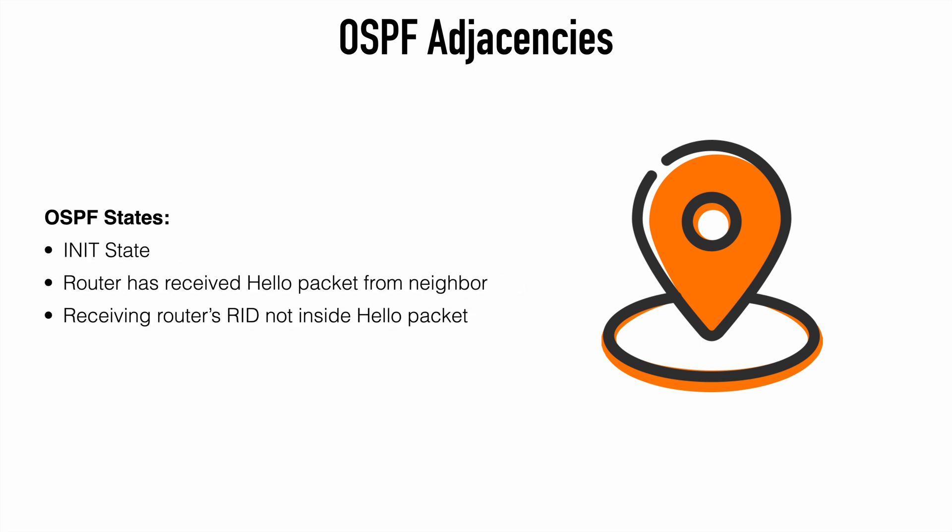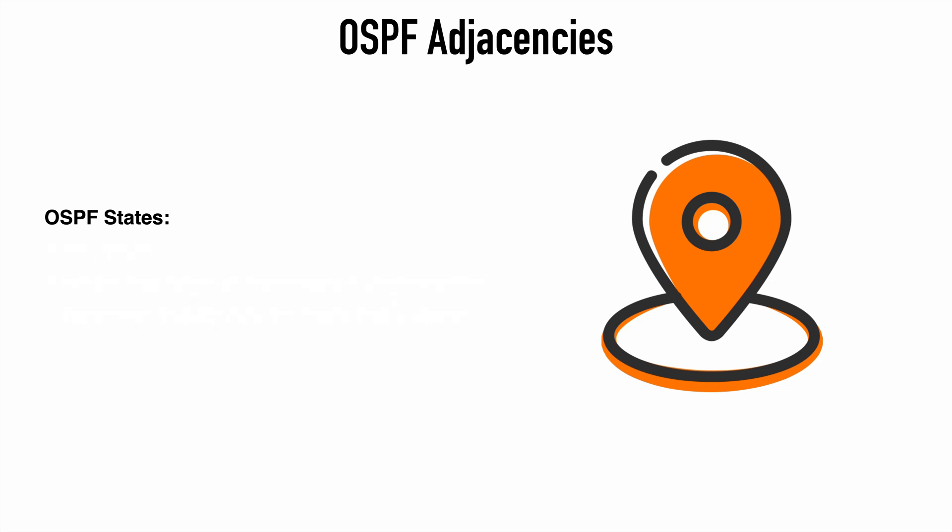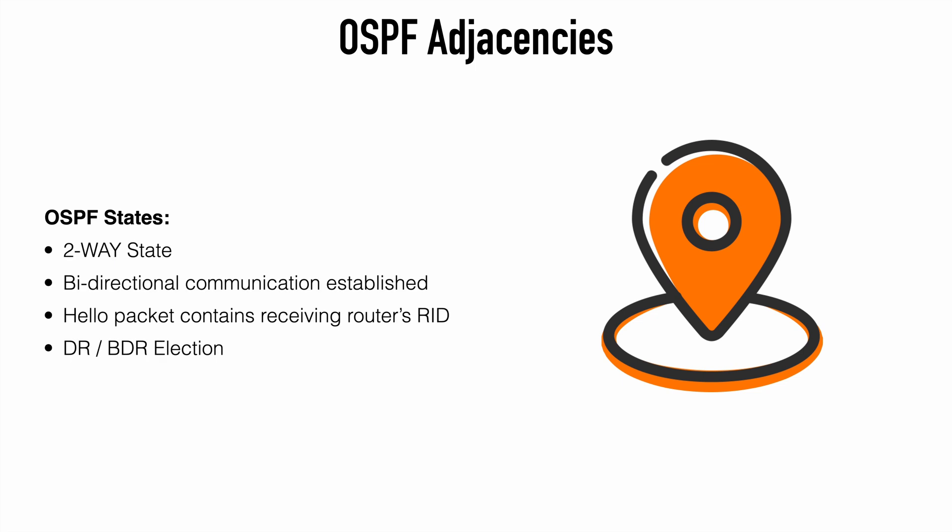The next state is the init state, which is the state when a router has received a hello packet from a neighbor, but our own router ID was not included in that packet. The reason we're looking for our own router ID in that packet is that it indicates we have bi-directional communication. When a router receives a hello packet from a neighbor, the router will take the sending router's router ID and add that into its own hello packet as an acknowledgement. Once the router does start seeing its own router ID in those neighbor hello packets, that means that we have bi-directional communication between our routers and so OSPF moves into the two-way state.